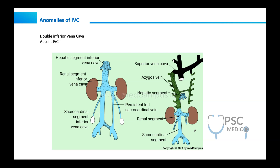After understanding the development of IVC, let us quickly jump into the anomalies of IVC. There are two kinds of anomalies. First is double IVC — two inferior venae cavae in the body. This occurs whenever there is failure of connection between the left sacro-cardinal vein with the left sub-cardinal vein, leading to a persistent left sacro-cardinal segment alongside the normal IVC.